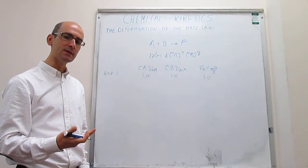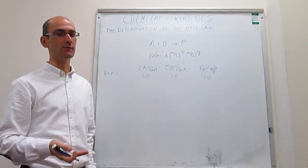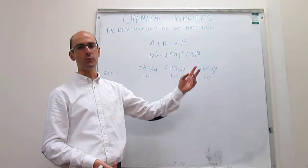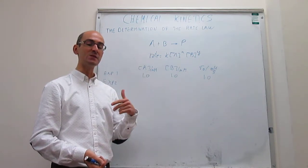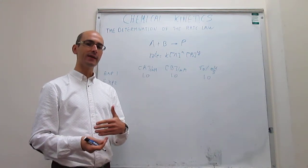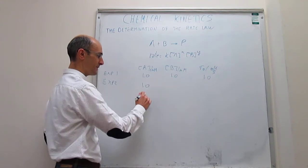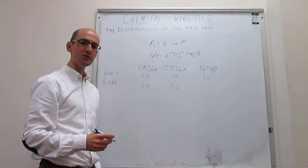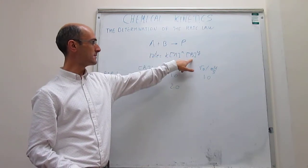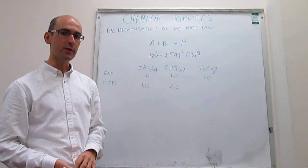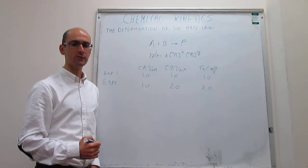Now we're going to explore the dependence of the rate on the concentration of just one of the reagents in isolation, to determine the reaction order with respect to each one. In a second set of experiments, we study the reaction order with respect to B, meaning we hold fixed the concentration of A so that any variation in the rate is only due to the change in the concentration of B. So we repeat the experiment with the same concentration of A and change the concentration of B, essentially holding fixed that term and only examining how the rate depends on [B]. Suppose that you determine the reaction rate is equal to 2 millimolar per second.